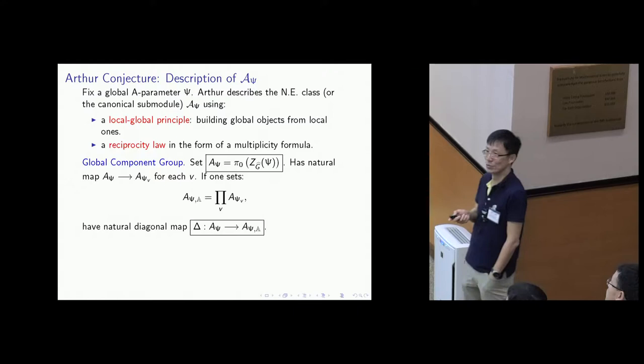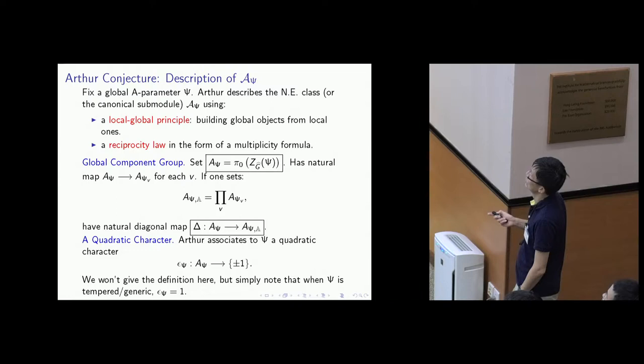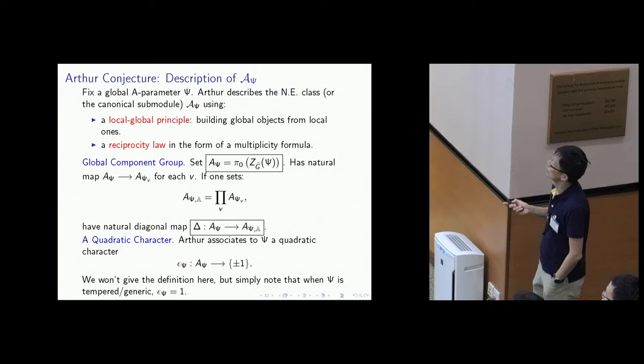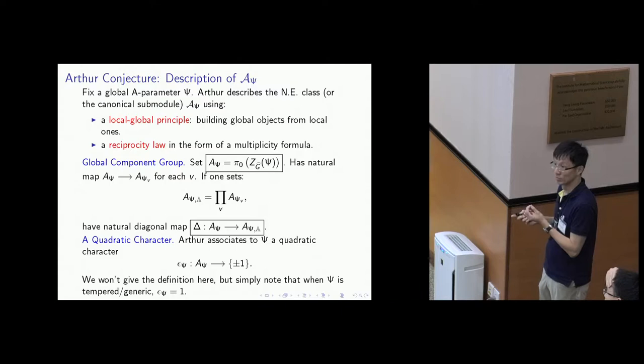I'm going to define something I will call the adelic component group, because I'm just taking the local component groups and forming the direct product. I introduce a notation with a subscript of the adeles. Then I can put these natural maps together to get a diagonal map from the global component group to the adelic one — very similar to mapping GK to GA. Another quantity you can get from the global A-parameter is a quadratic character of the global component group. I won't give the definition here because a lot of times it is trivial — for example, when psi is generic, meaning trivial on the Arthur SL2, this character is always trivial.